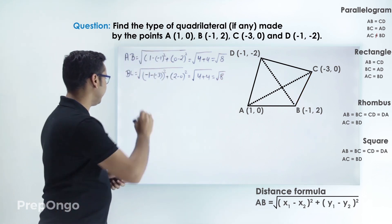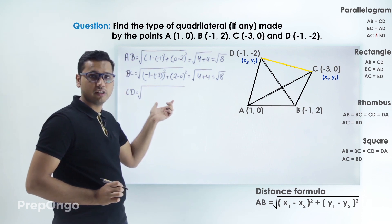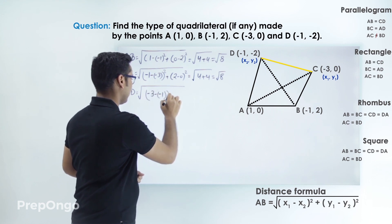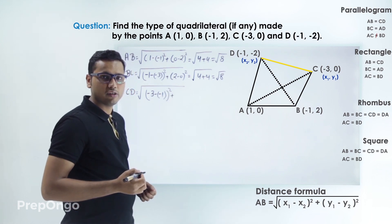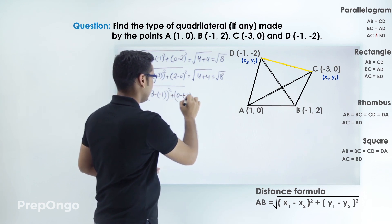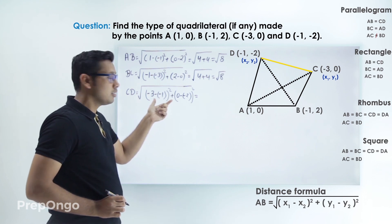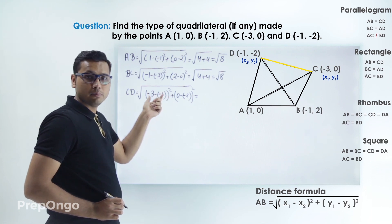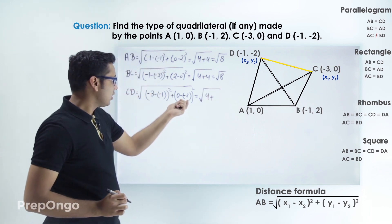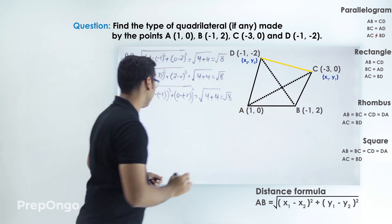Now let's find the distance CD. Applying the distance formula and putting the coordinates, this will be (minus 3 minus minus 1) squared plus (0 minus minus 2) squared. Solving: minus 3 plus 1 gives minus 2, and 0 plus 2 gives 2, so we get 4 plus 4, and the length CD is also coming out to be root 8.